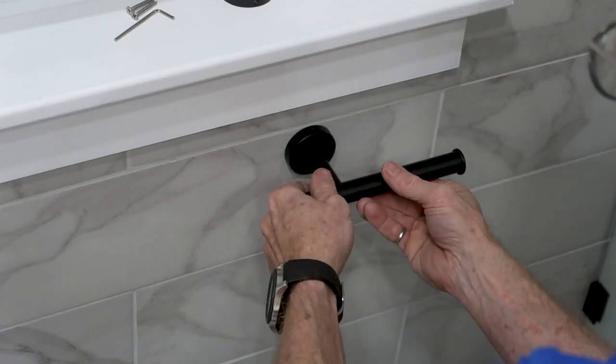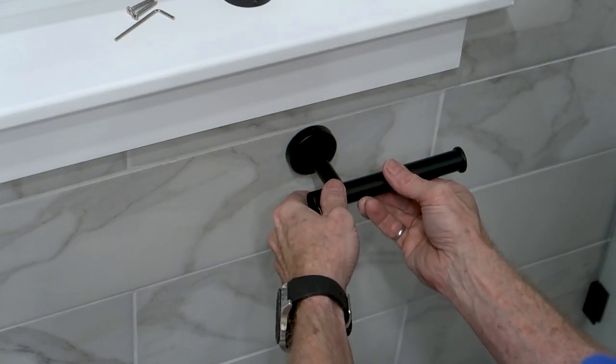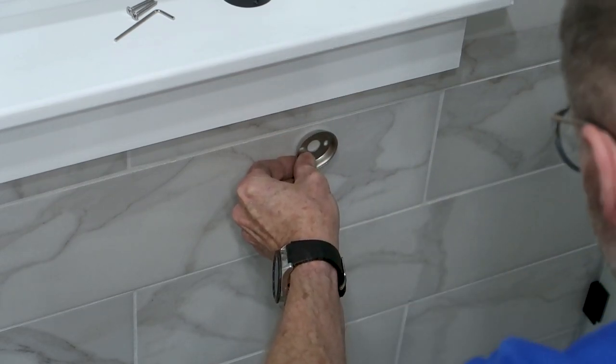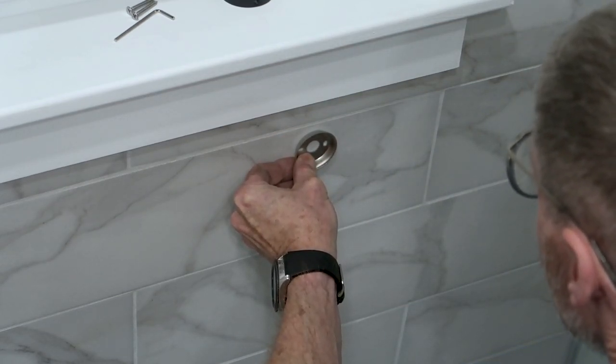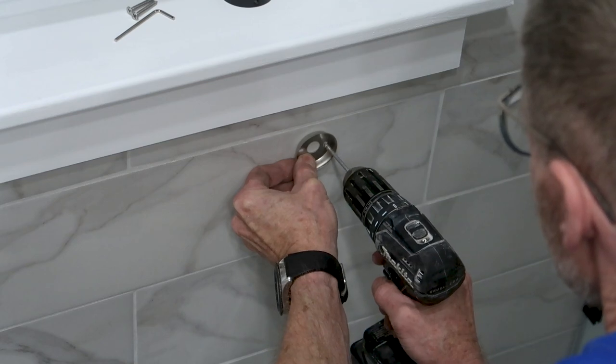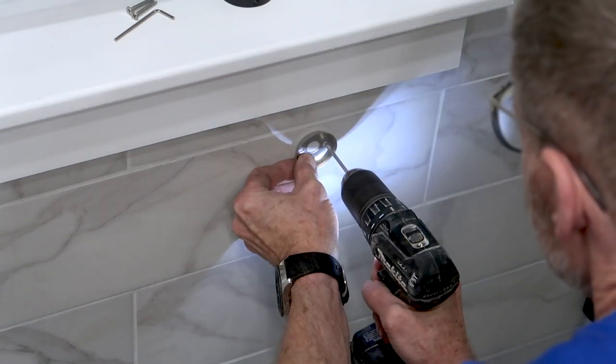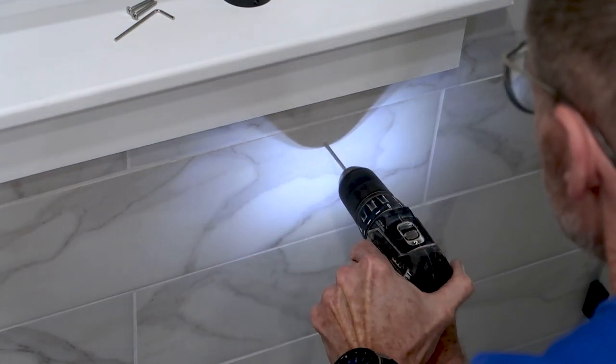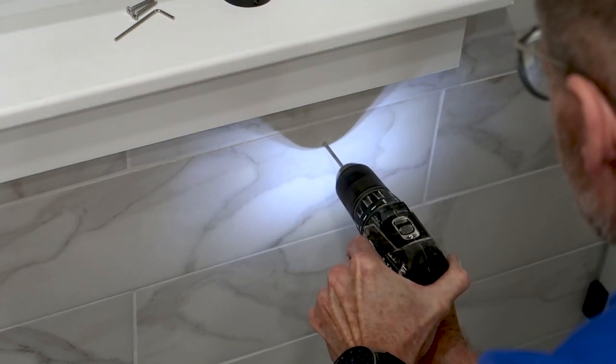Next, I'll put the toilet paper holder. Sorry, I couldn't resist a bit of bathroom humor. I'm using a special drill bit that's made for tile. It's okay to drill now and make some dust because the caulk is hard.